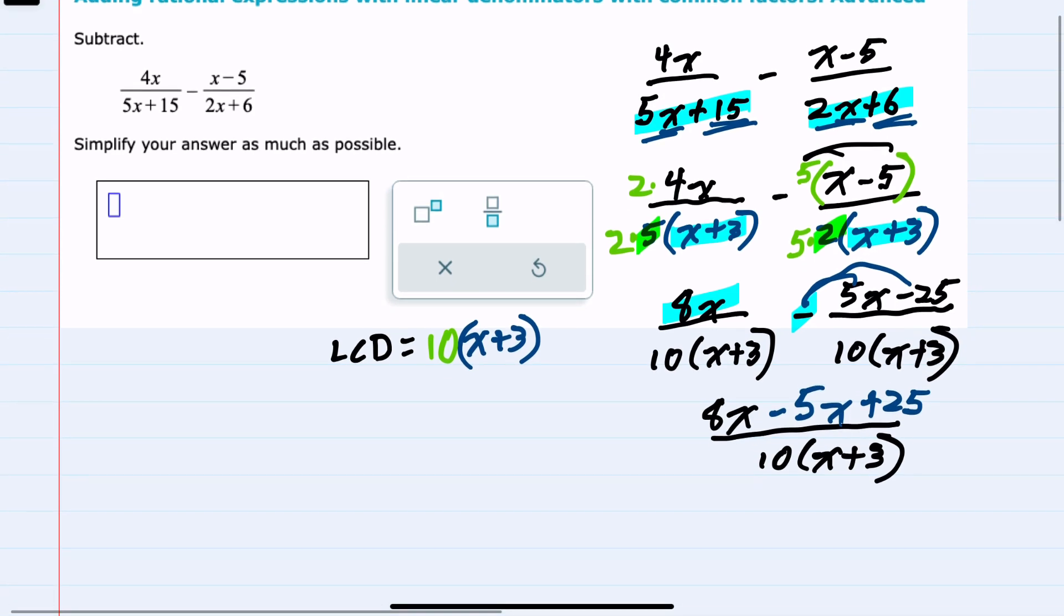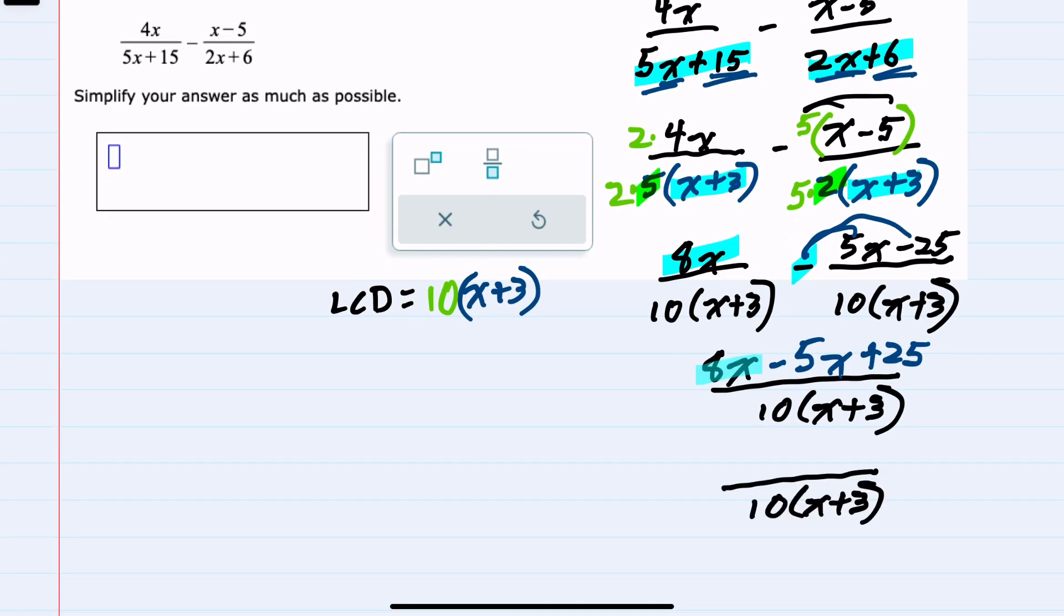We can now combine a couple of like terms. The 8x minus 5x is 3x, and we bring down the plus 25.